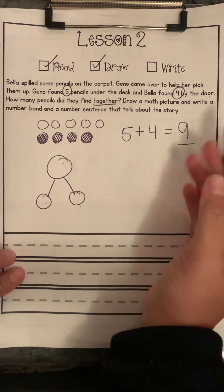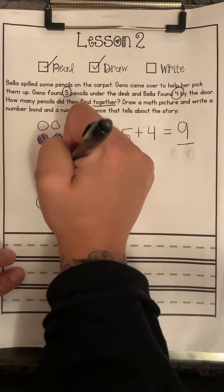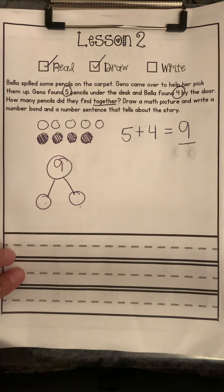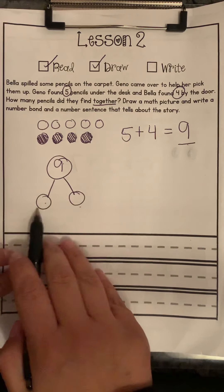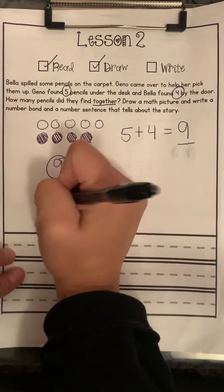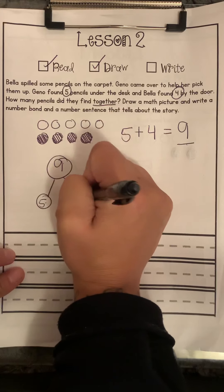So we know our whole number is our biggest number, and that is nine. And we know the two smaller numbers that it took to get to nine this time were five and four.